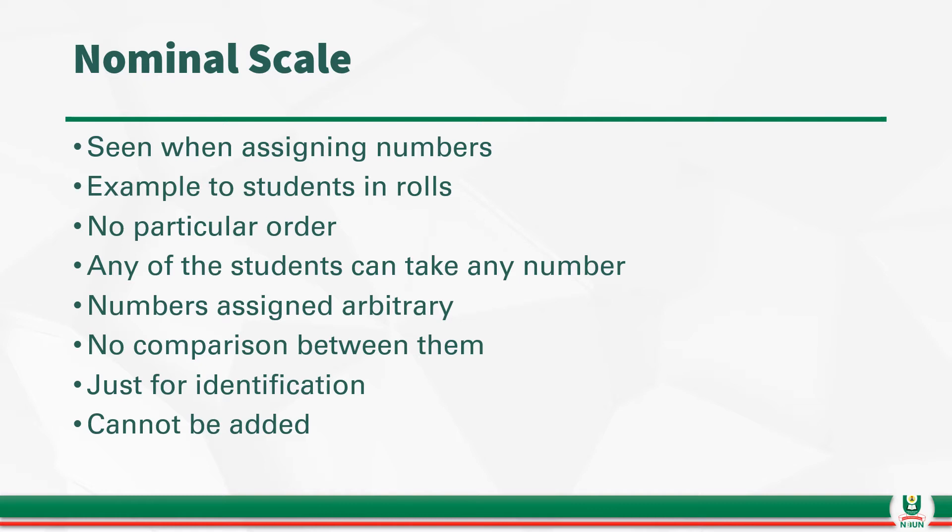So, those numbers in nominal scale cannot be added. So, you have seen what a nominal scale will look like. We said the numbers are assigned arbitrarily. There is no particular order. Any student can take any number. There is no comparison between them. And the purpose of such numbering is just for identification. You cannot add number 1 and number 2 to make it 3. The number 3 is standing on its own. And it is a different number altogether given to a different student.